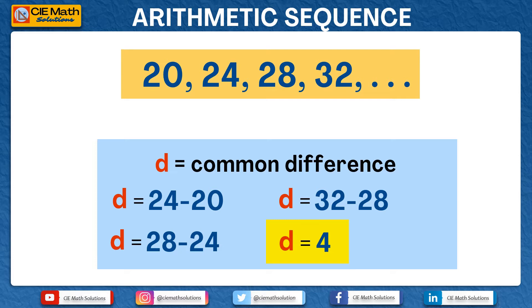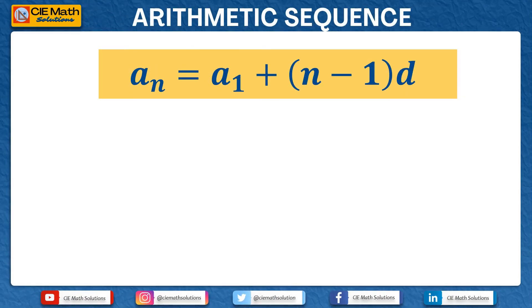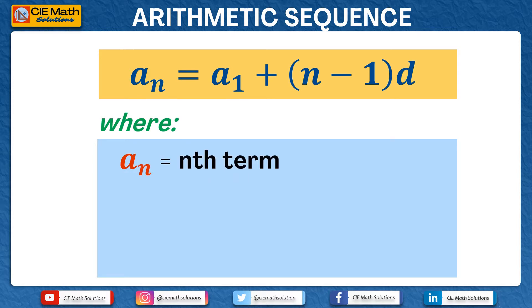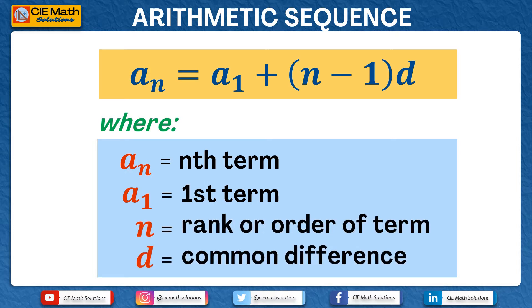For any arithmetic sequence, there will always be a specific rule relating to the terms of the sequence. We know that the general term of an arithmetic sequence is given by an equals a1 plus n minus 1 times d, where an is the nth term or the general term, a1 is the first term, n is the rank or order of the term, and d is the common difference of the sequence. The question now is: where did this come from? How can various arithmetic sequences be generalized to have this nth term?